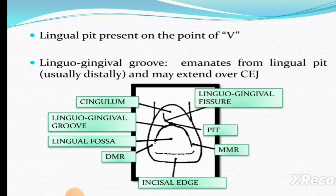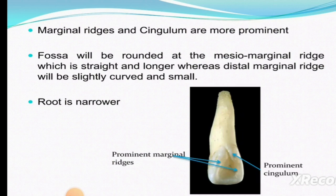The lingual gingival fissure emerges from the pit and mostly goes distally, sometimes extending over the cemento-enamel junction. You can see the cingulum, lingual gingival fissure, mesial marginal ridge (MMR), distal marginal ridge (DMR), incisal edge, and lingual fossa. The lingual fossa's V-shape is not perfectly formed — both sides are very rounded. The marginal ridges and cingulum are more prominent because they are more rounded and the fossa is deeper. The mesial marginal ridge is straight and longer, whereas the distal marginal ridge is slightly curved and smaller.